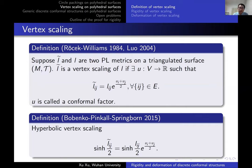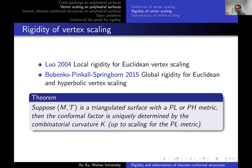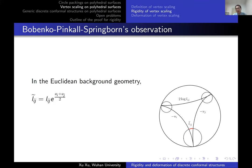The hybrid version of vertex scaling was introduced by Bobenko-Pinkall-Springborn. For rigidity of vertex scaling, Luo proved local rigidity for Euclidean vertex scaling, and Bobenko-Pinkall-Springborn proved global rigidity for Euclidean and hyperbolic vertex scaling. They further observed a deep connection between vertex scaling and hyperbolic geometry.